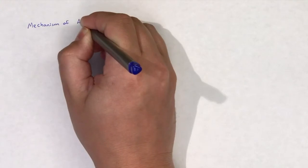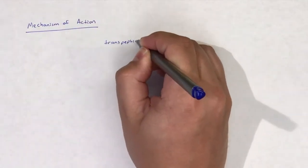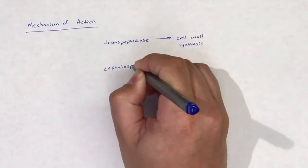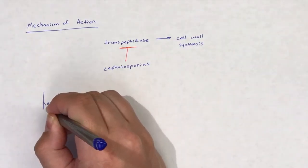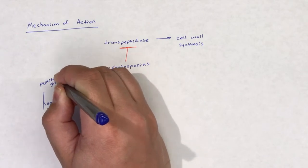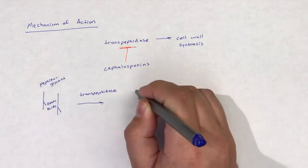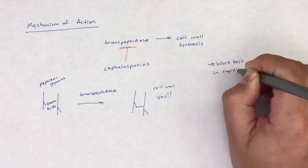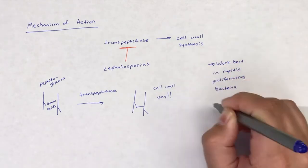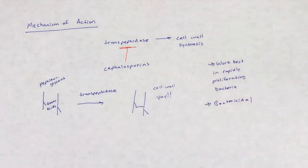Cefepime shares the same mechanism of action as other cephalosporins. Cephalosporins kill bacteria by interfering with the transpeptidation reaction by binding to and inhibiting transpeptidase. Cephalosporins are cell wall synthesis inhibitors and are bactericidal. For more details on this mechanism, please refer to the video that focuses on cephalosporins as a whole.